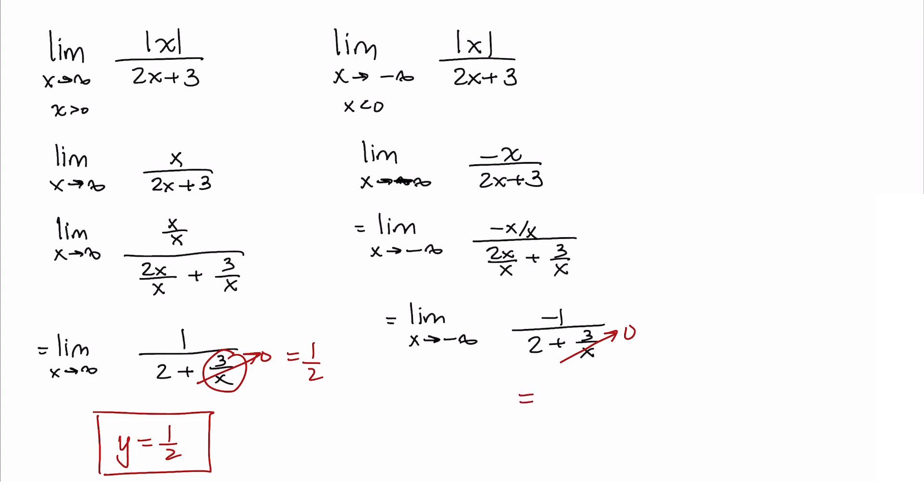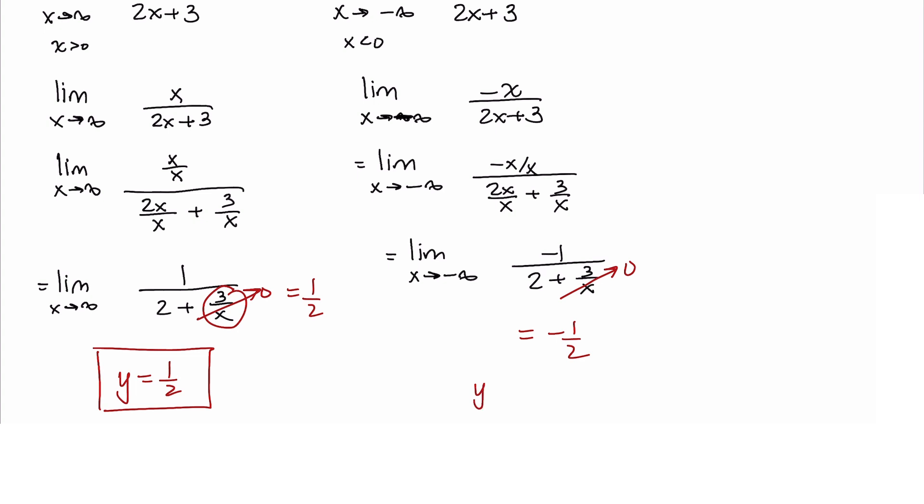This limit is negative one-half. So another horizontal asymptote is y equals negative one-half.